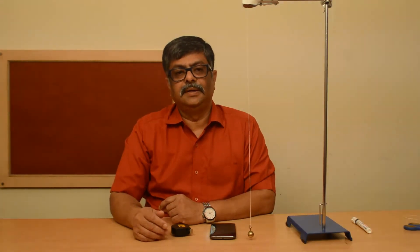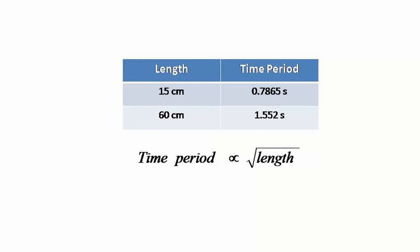When the length of the pendulum is increased four times, the time period doubled. This indicates a square root relation between the length of the pendulum and the time period. We will measure the time period for two more lengths and then plot a graph between the length of the pendulum and the time period.